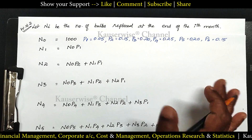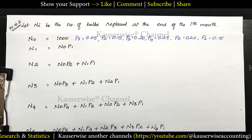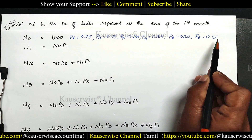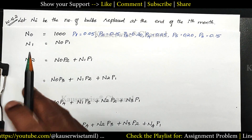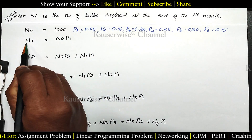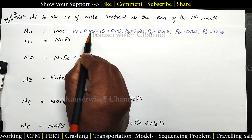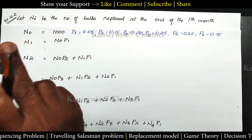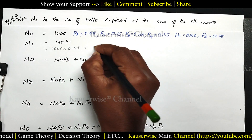Now let's see Working Note 2. Let Ni be the number of bulbs replaced at the end of the ith month. N0 refers to 1000 bulbs replaced initially. With the help of the probability, we are going to find out how many bulbs need to be replaced at the end of each month. At the end of the first month, N1: the probability of failure is 0.05. Number of bulbs failed at the end of first month = 1000 × 0.05 = 50 bulbs. This is the number of bulbs replaced at the end of the first month.